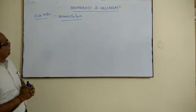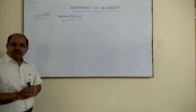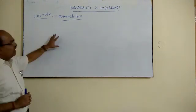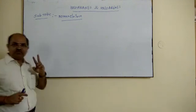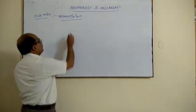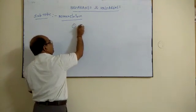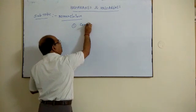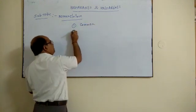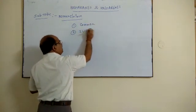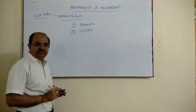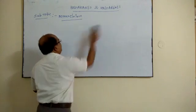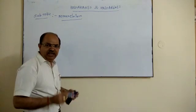Students, today we are going to discuss the nomenclature of haloalkanes. As you know, there are two systems of nomenclature. One is the common name or trivial system, and the second is the IUPAC system. Now let us see what are the common and IUPAC systems for haloalkanes.